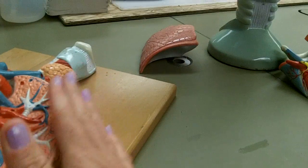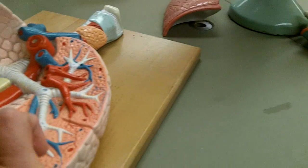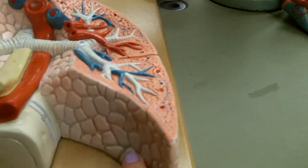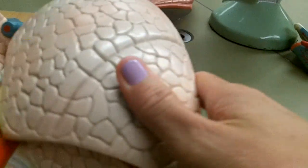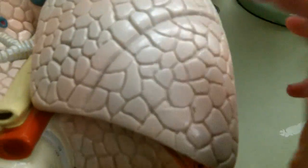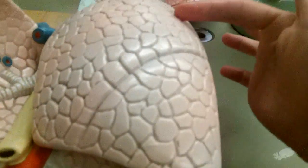Anyway, the left lung only has two lobes, and it has the cardiac notch on it. The left lung has an oblique fissure only. It does not have a horizontal fissure.